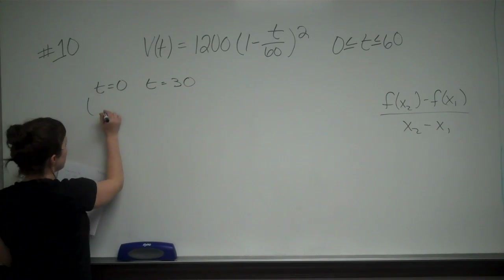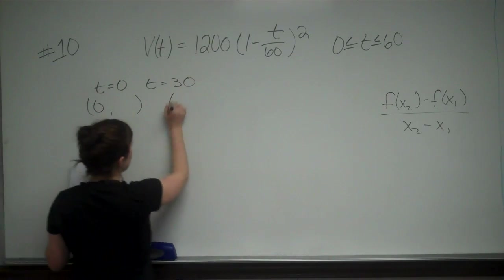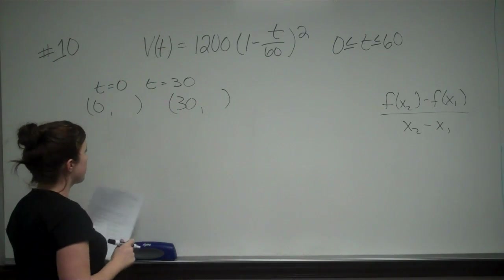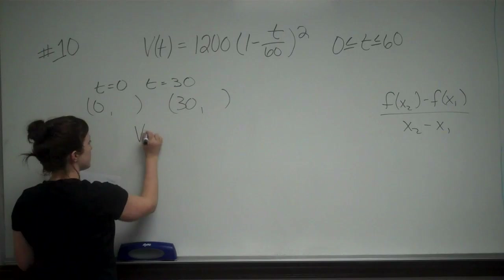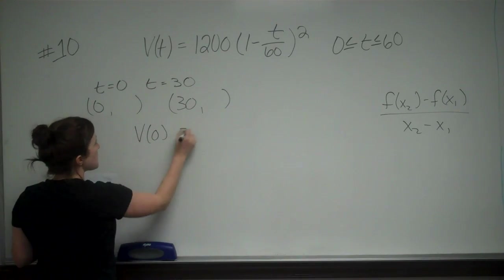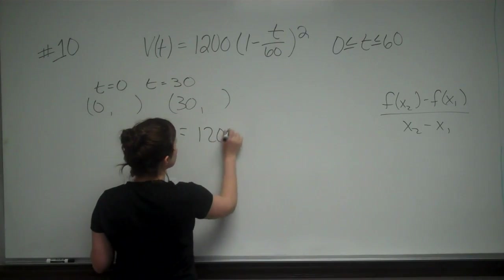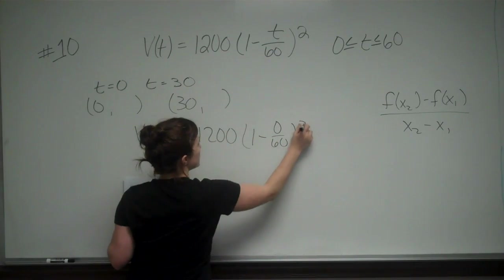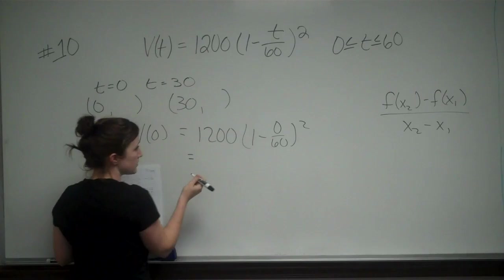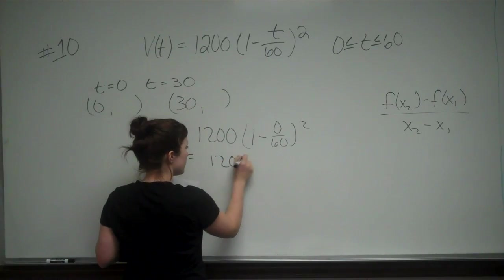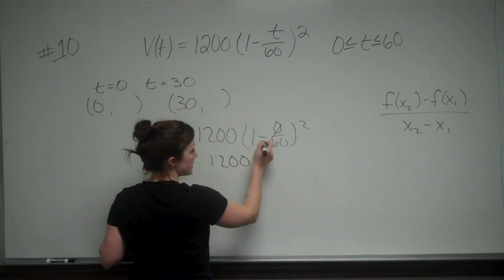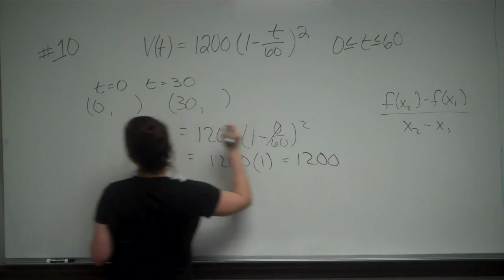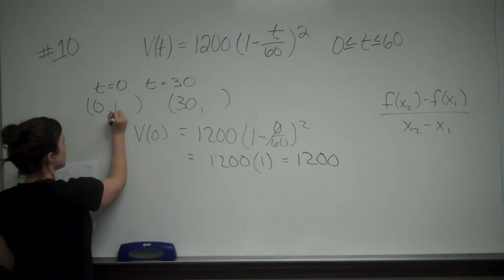We need to figure out our points: (0, ?) and (30, ?), so we need to find our Y values for both. V(0) equals 1200 times (1 minus 0 over 60) squared, which equals 1200 times 1 squared, equals 1200. So our first point is (0, 1200).